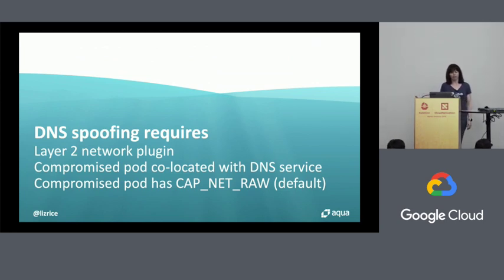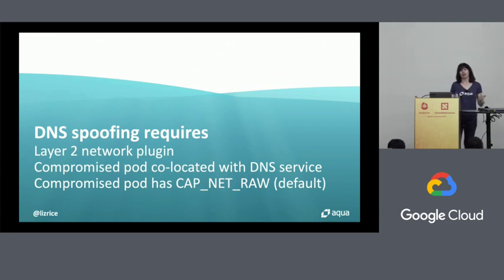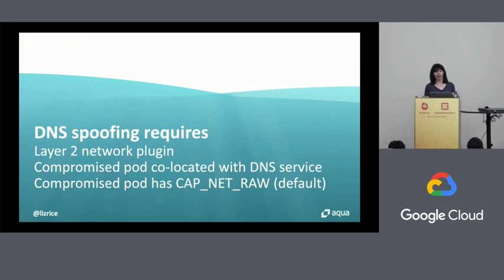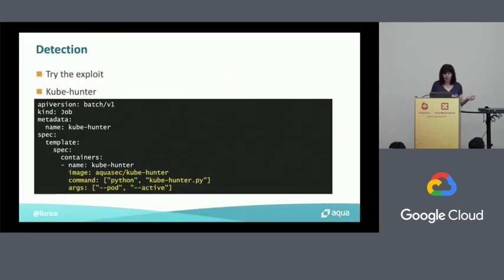In summary, if you're using a layer 2 network plugin and you have a pod that gets compromised, and it happens to be running on the same node as your DNS service, and that compromised pod has CAP_NET_RAW — that compromised pod could take over your DNS service and ruin internet traffic from other pods on that node. You might be wondering how to tell whether your cluster is affected. You could try the exploit for yourself using the URL I'll give you.